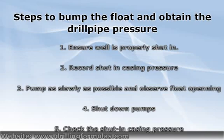Step 4: Shut down the pumping operation as soon as an increase in casing pressure is detected. Step 5: Check the shut-in casing pressure again. If there is any excess casing pressure, bleed off some pressure in small increments until it equals or is a little bit above the shut-in casing pressure recorded in Step 2.